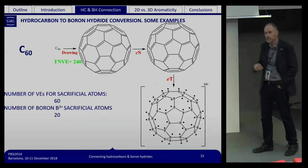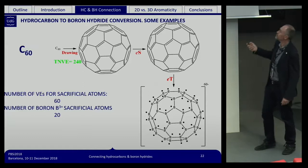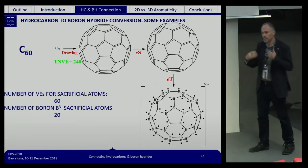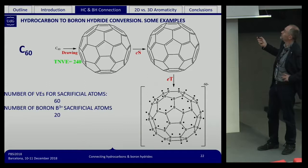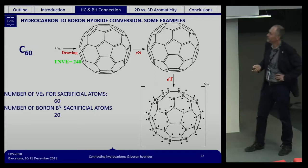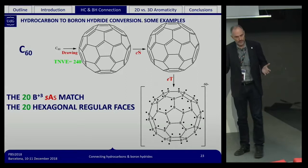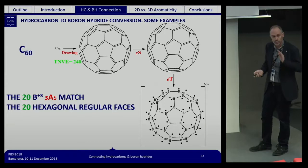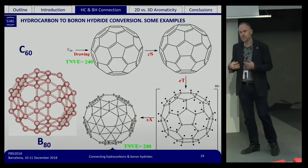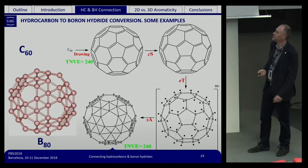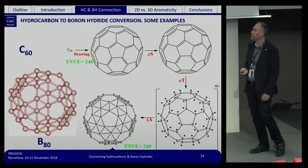You can also take C60 and do the electronic transmutation, giving 60 negative charges. In this case we suggest using B3+ as the sacrificial atom; to make the system neutral you need 20 of these cations. Since fullerene has 12 pentagonal and 20 hexagonal rings, it seems natural to add a boron at each hexagonal ring position. From this procedure you get the B80 fullerene, which has been predicted theoretically but not yet synthesized experimentally. Throughout the process the number of valence electrons is kept constant.